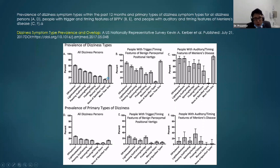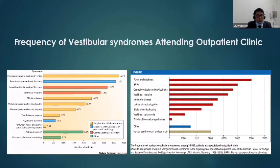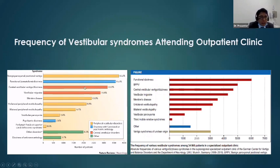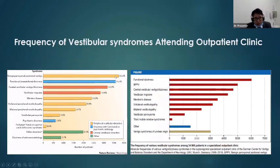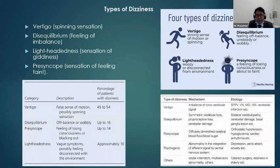Most dizziness causes are benign. The majority are benign positional vertigo, and the rest are functional and also central vestibular vertigo. You need to know what benign positional vertigo is, you need to detect it, and you need to know how to treat it, because it is common. People will tell you they are off balance, feel lightheadedness and everything. Some people will tell you more than one complaint.